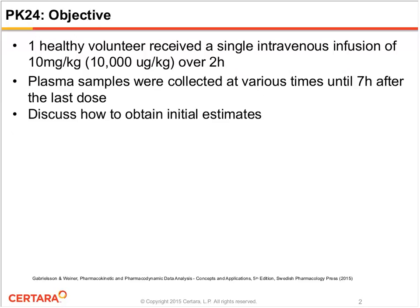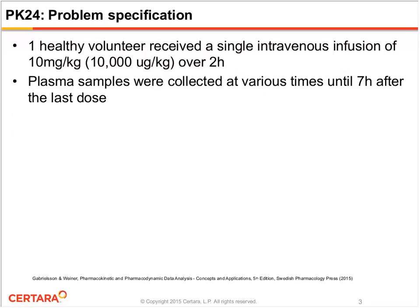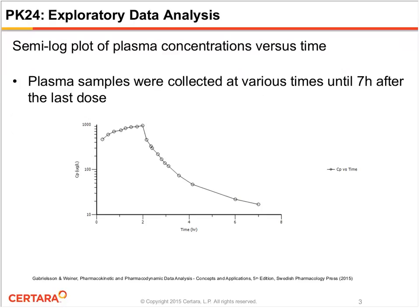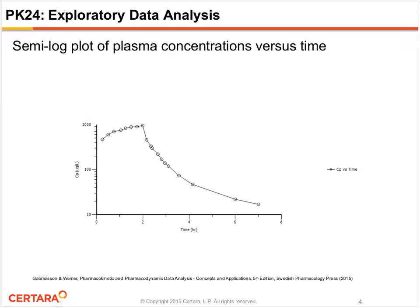In this particular dataset, we have data from one healthy volunteer that received a single intravenous infusion of 10,000 micrograms per kilogram that was administered over a two-hour period. And then plasma samples were collected at various times after dosing. Here is a plot of what the data looks like on semi-log scale. You can see that the data is actually very well behaved. This is not the fitted model here, the points are just connected directly. But of course, we're going to go ahead and fit a model to the data.